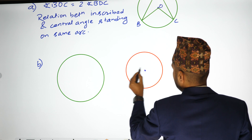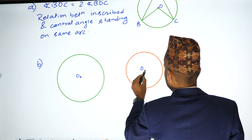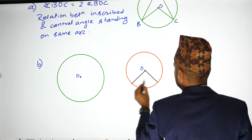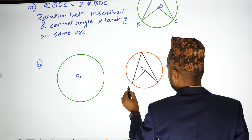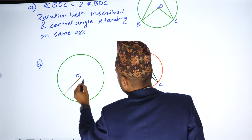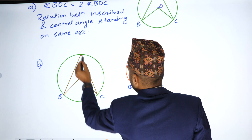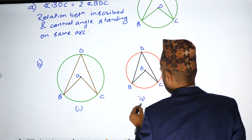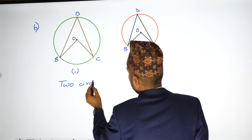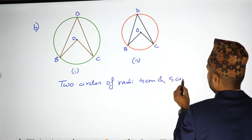The center is O. We draw a line and mark the angle. Two circles of radius four centimeters and five centimeters are drawn.